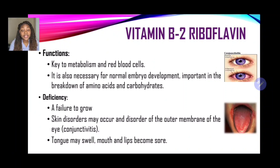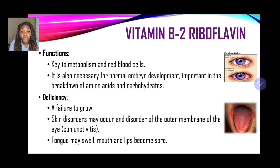Our next water-soluble vitamin is vitamin B2, and the scientific name is riboflavin. The functions are: it is key to metabolism, also necessary for red blood cell production, normal embryo development, and important in the breakdown of amino acids and carbohydrates. Deficiencies resulting from a lack of vitamin B2 or riboflavin are failure to grow, skin disorders, disorder of the outer membrane of the eye called conjunctivitis, or the tongue may swell, and mouth and lips become sore.